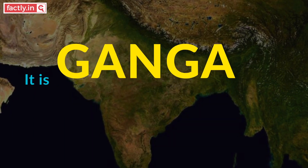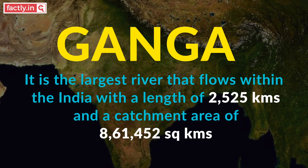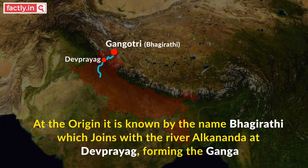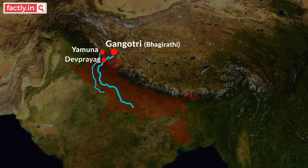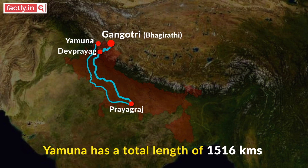The next major river is Ganga. It is the largest river that flows entirely within India, with a length of 2,525 km and a catchment area of 8,61,452 km². Ganga has its origin in the Gangotri glacier in the Himalayas, in the state of Uttarakhand. At its origin, it is known by the name Bhagirathi, which joins with another river Alakananda at Devprayag, forming the Ganga. It flows to Rishikesh and enters what we refer to as the Gangetic Plain. It joins its largest tributary, Yamuna, at Prayagraj, earlier referred to as Allahabad. Yamuna has a total length of 1,560 km and is one of the largest rivers in India that does not flow into the sea.